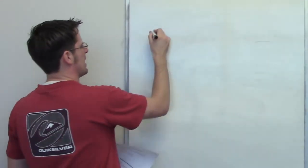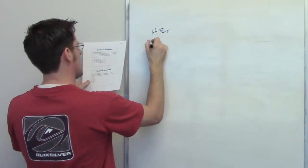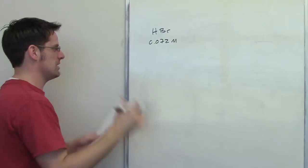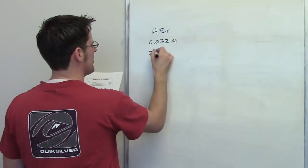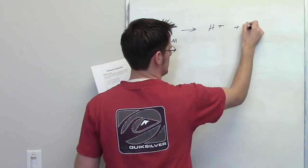Now in this question, it says that I've got HBr, and I've got a solution of HBr that is 0.072 molar, or moles per liter, that's the concentration, and I've got 25 milliliters of it. It's of course going to dissociate completely to form H+ and Br-.